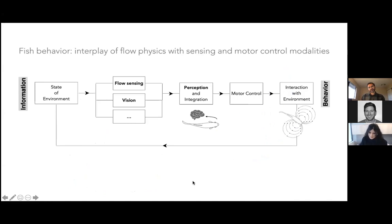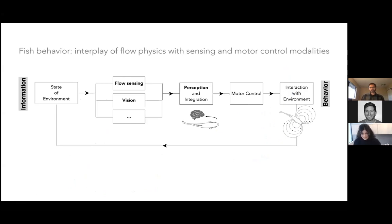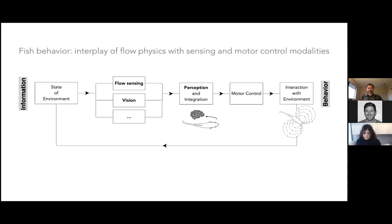What we are interested in is behavior—locomotion or swimming as an expression of behavior. Behavior in all forms of life results from the ability to interact with an environment and to actively sense and respond to that environment. For the fish, the environment is fluid, and the interplay between flow physics and sensing and motor control modalities are largely unknown.